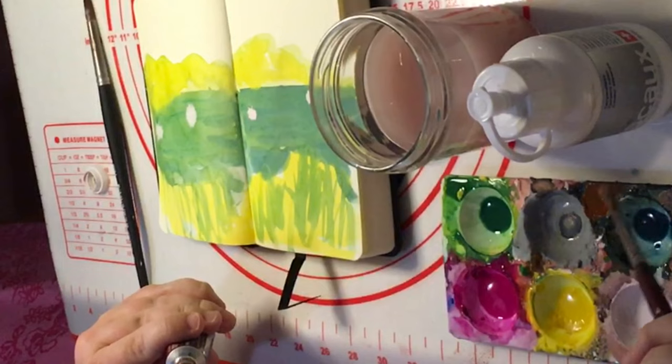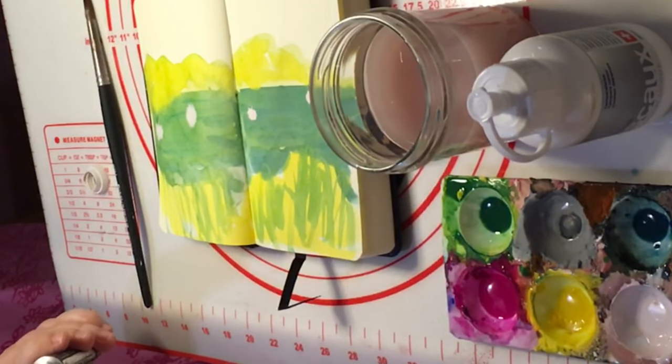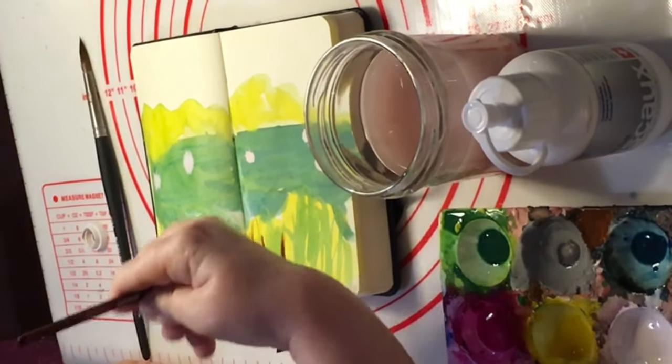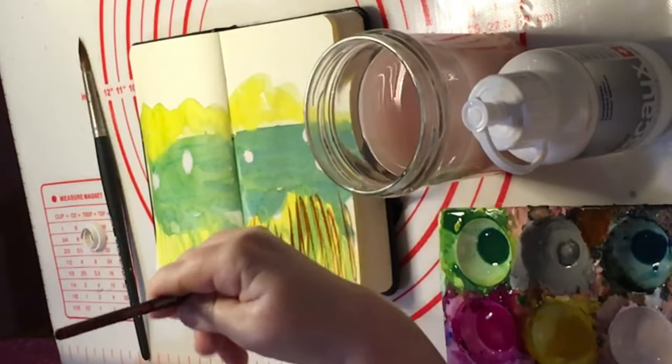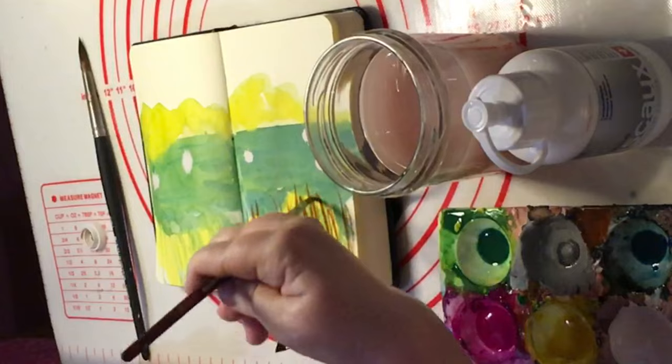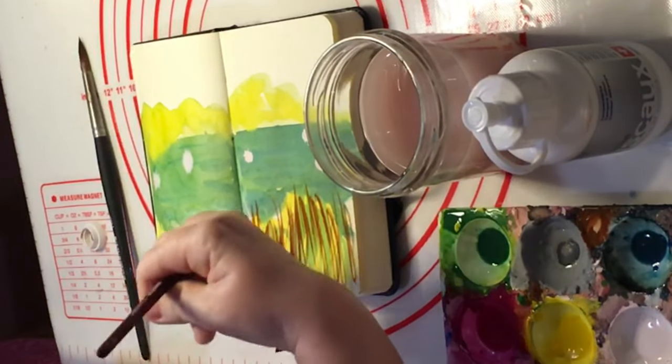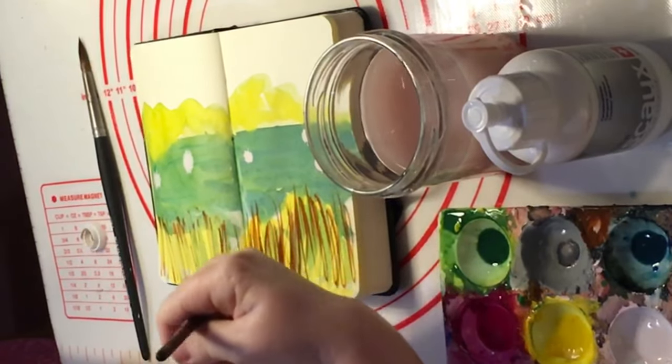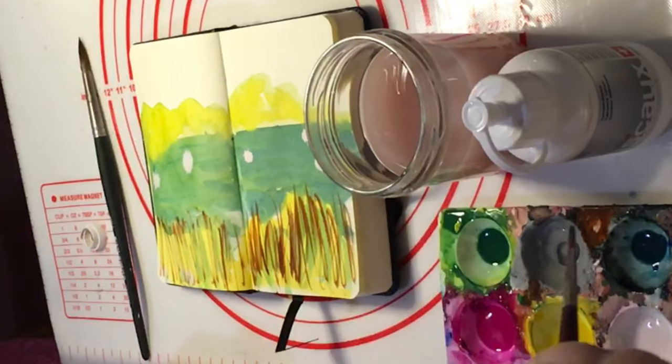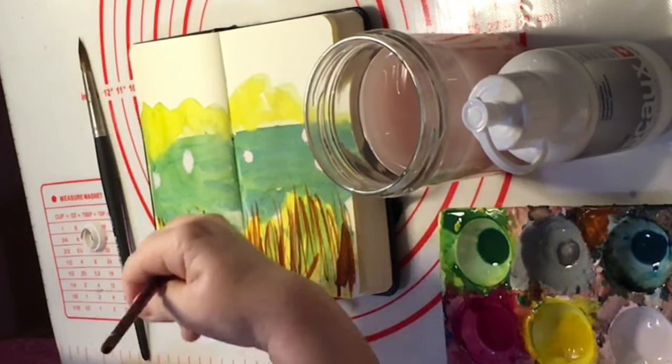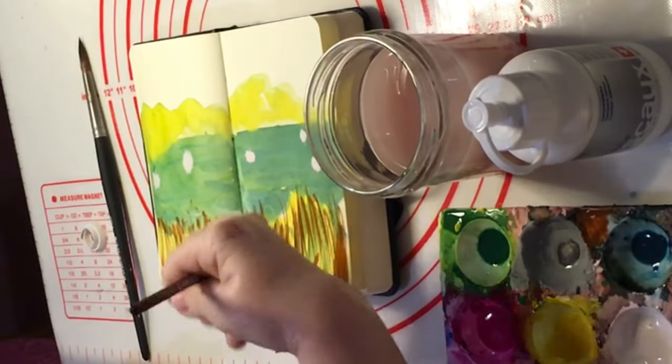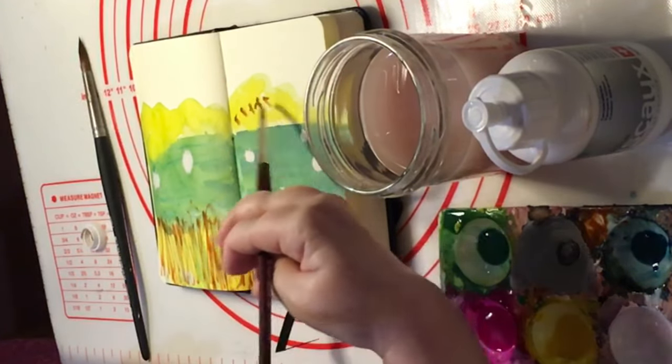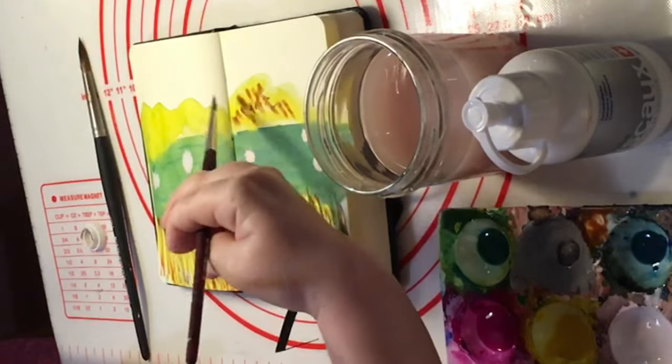And I'm just mixing that into a bit of black that's already dried on my palette. Again, this just, we're adding to the shrubbery. Kind of dry brush in a way. And then I'm just dabbing with this.